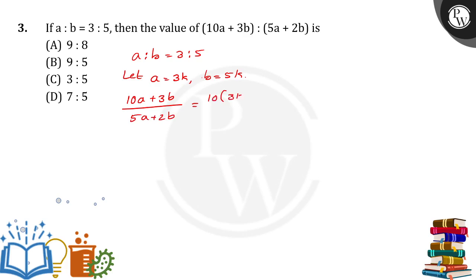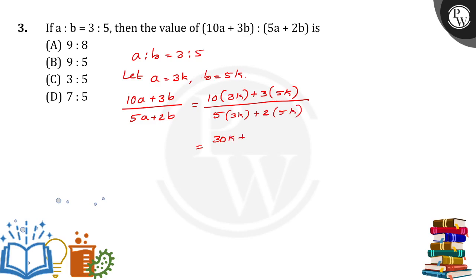So 10 into 3k plus 3 into 5k, divided by 5 into 3k plus 2 into 5k. So 10 into 3k will give 30k, plus 3 into 5k is 15k, divided by 5 into 3k is 15k, plus 2 into 5k is 10k. So we will get 45k by 25k.